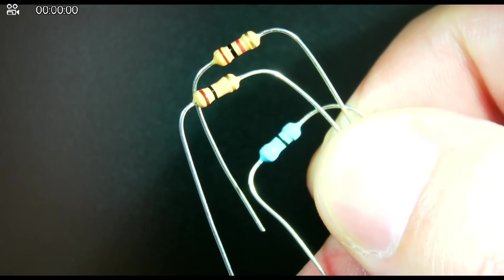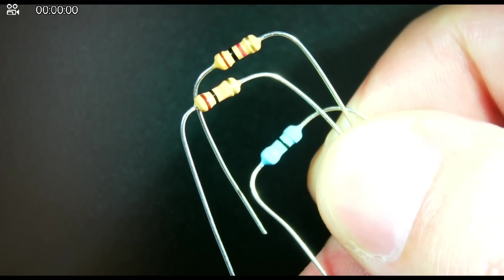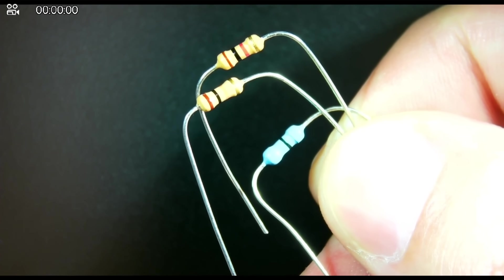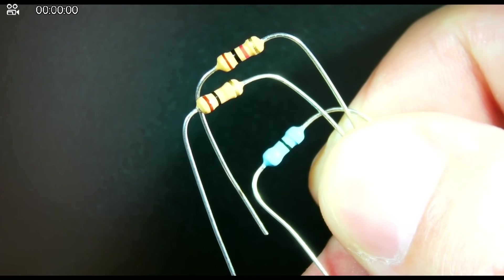What you see here are resistors. They're fundamental electronic components that resist the flow of current through a circuit. I've got three of them here and they all resist at different values.